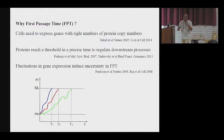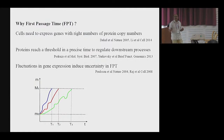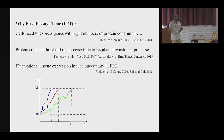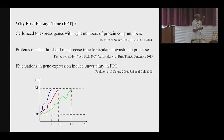So there is a tolerance to that threshold. What Dekel and Uriel have shown is that the numbers of the lac-Z proteins must be within some value with some tolerance — only then can it trigger the downstream processes.